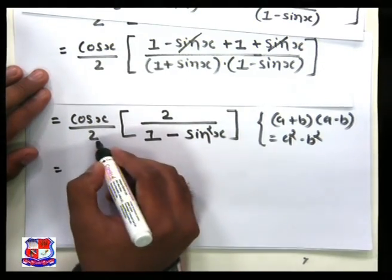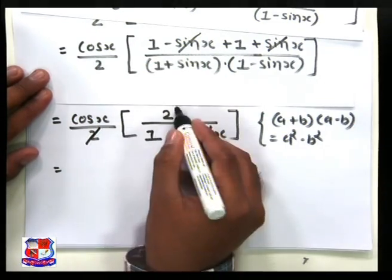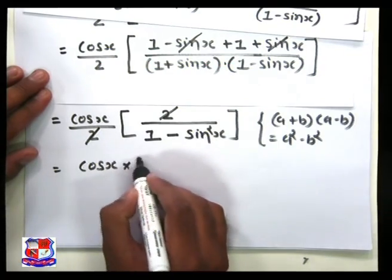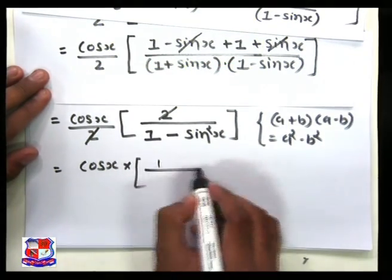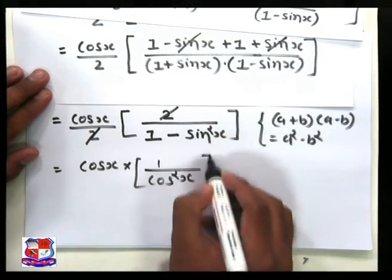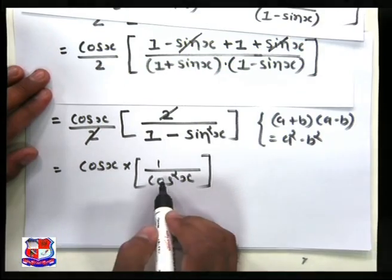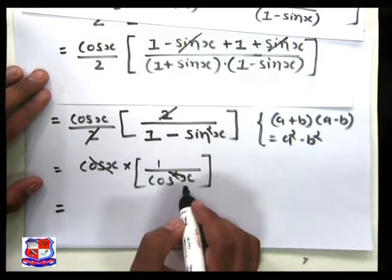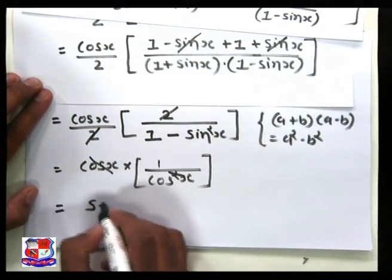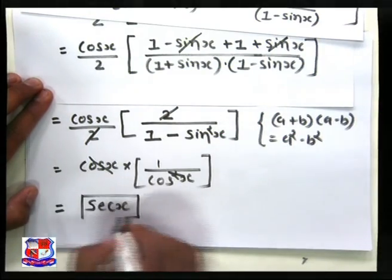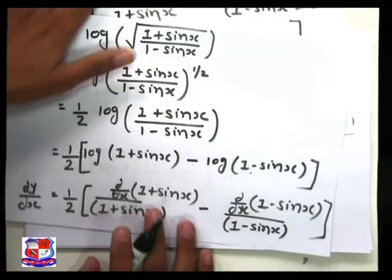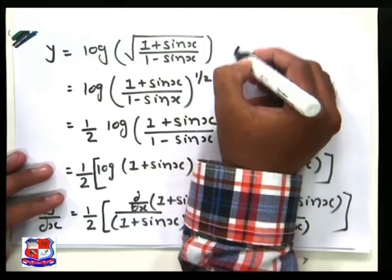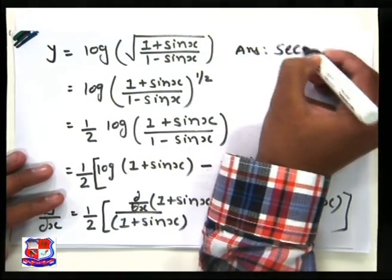Since 1 minus sin²x equals cos²x, the numerator and denominator simplify: cos x divided by (2 times cos²x) gives 1 upon cos x, which is sec x. So we get the final result: the differentiation of log√((1 plus sin x)/(1 minus sin x)) is equal to sec x.